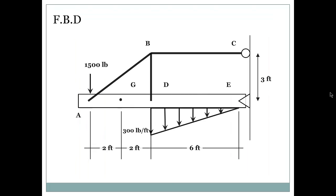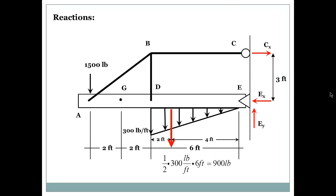First of all, this is the free body diagram, so we will do the free body diagram to make the picture look easier for us for analysis. And now we will do the reactions. So we have at joint C, we have one reaction, which is CX. At joint E, we have two reactions, which are EX and EY.